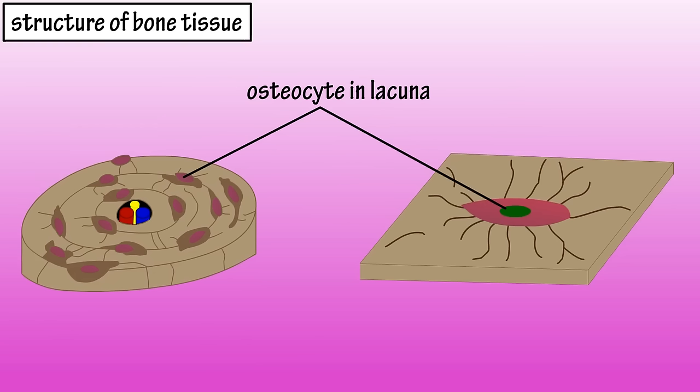Lacunae are the small spaces in bone tissue where mature bone cells called osteocytes are imprisoned. These cells are responsible for maintaining the bone matrix.